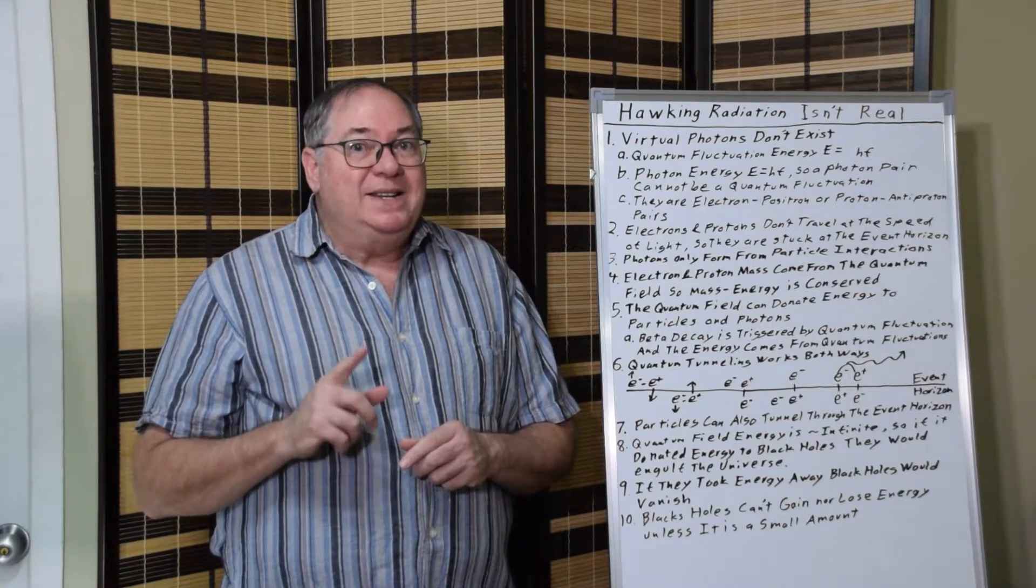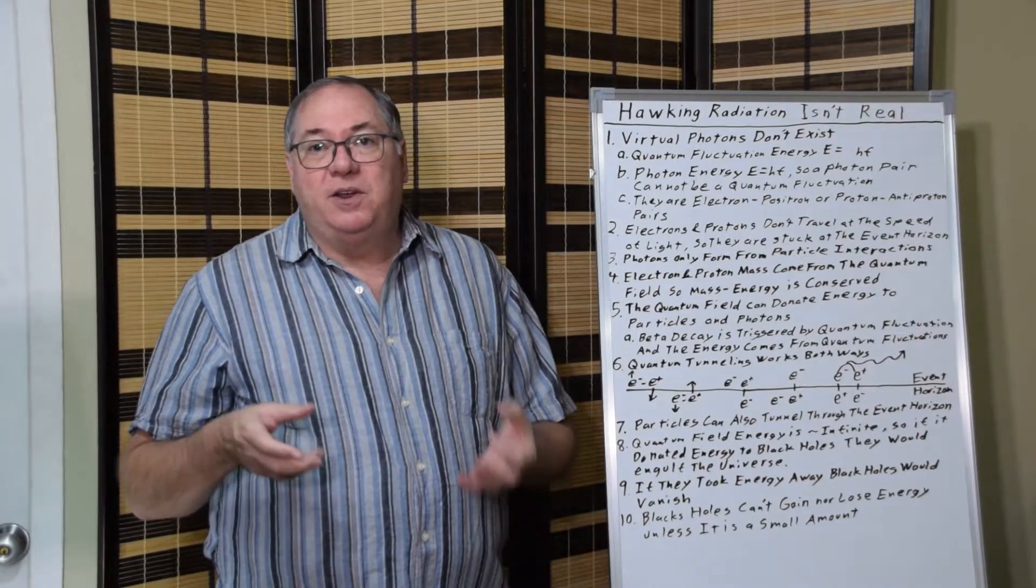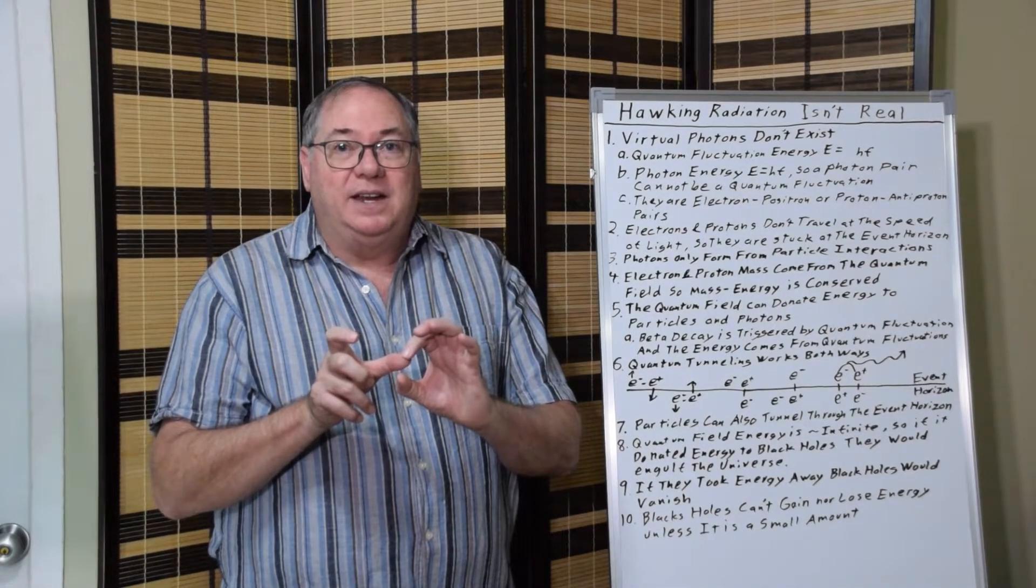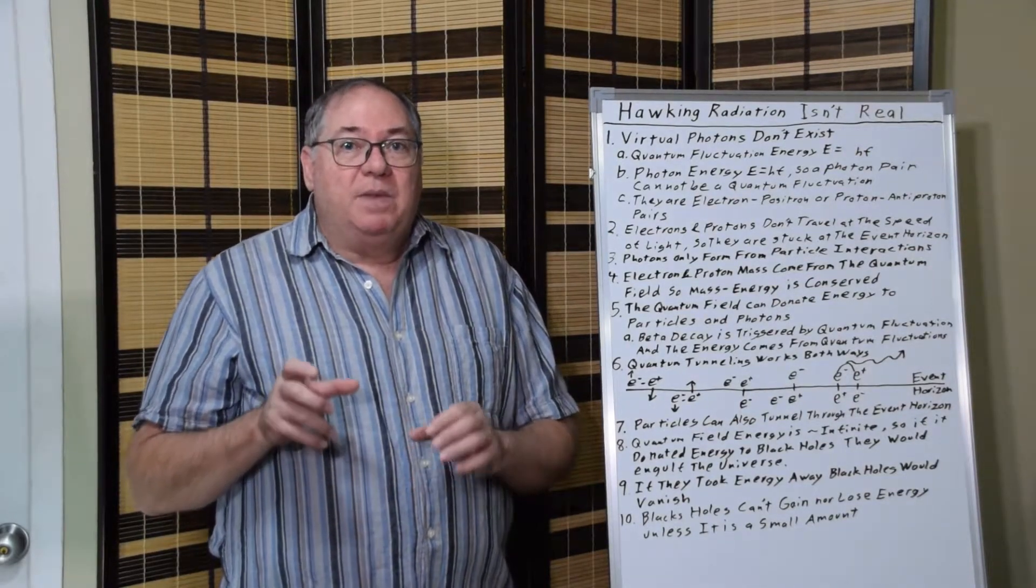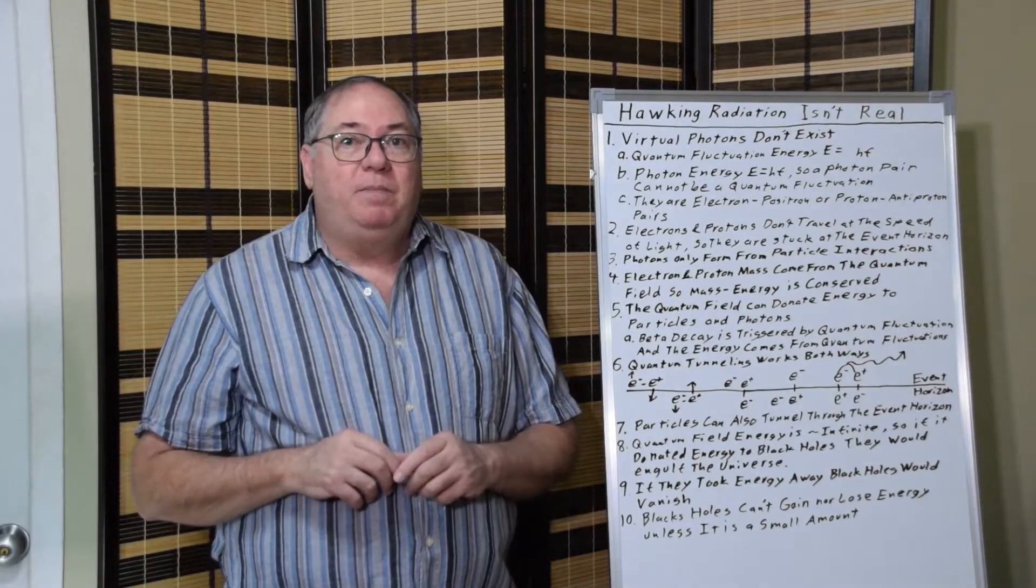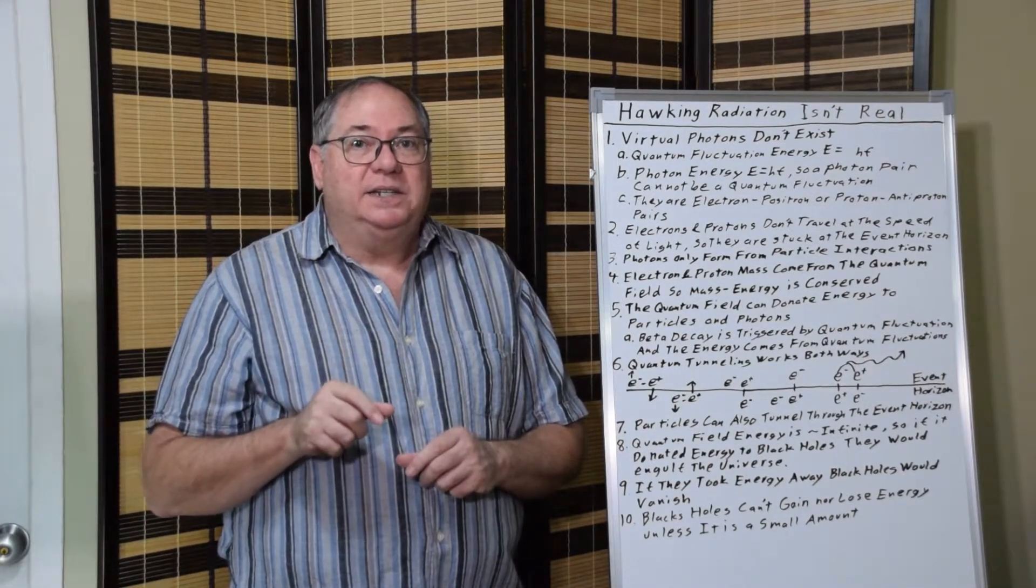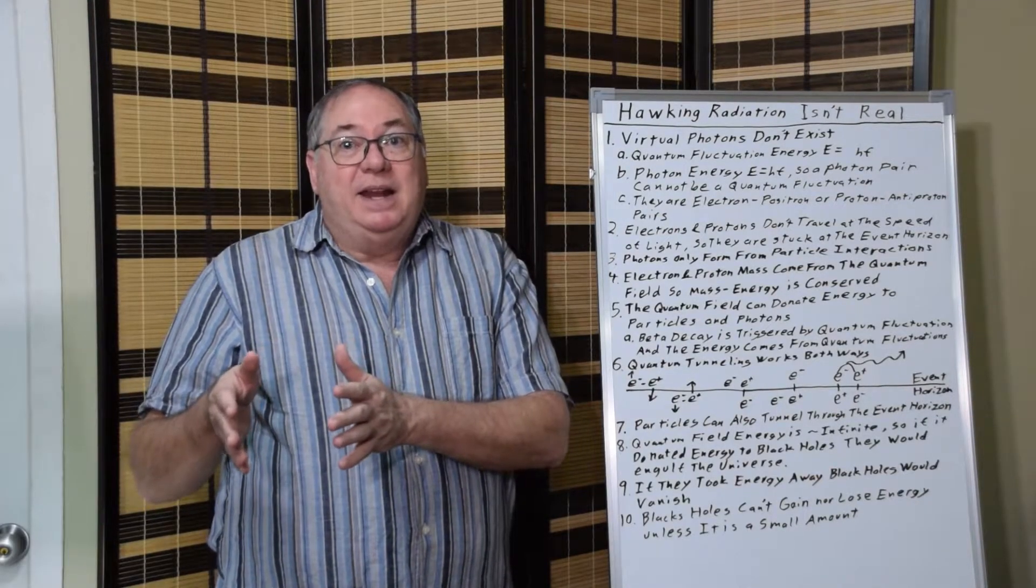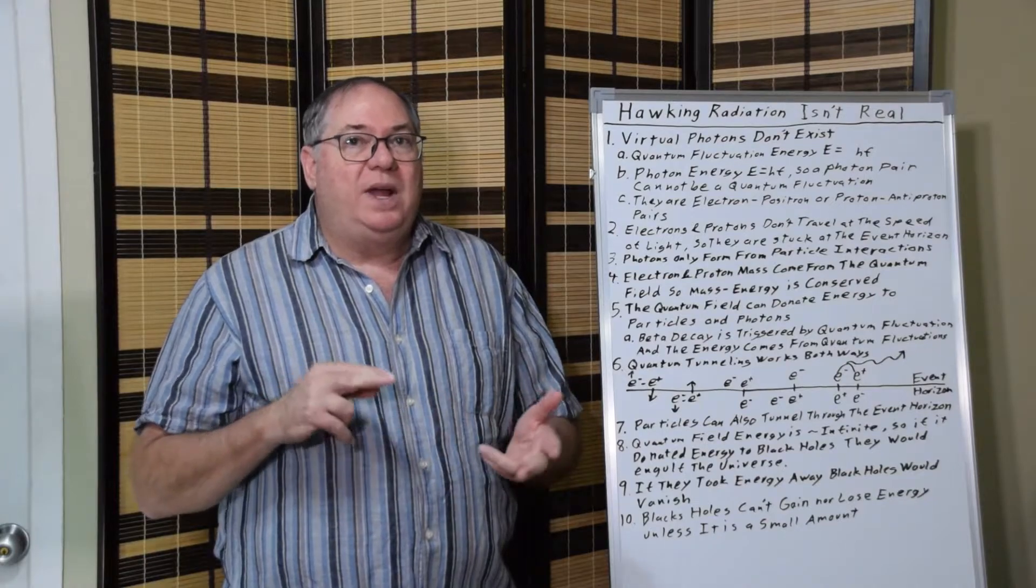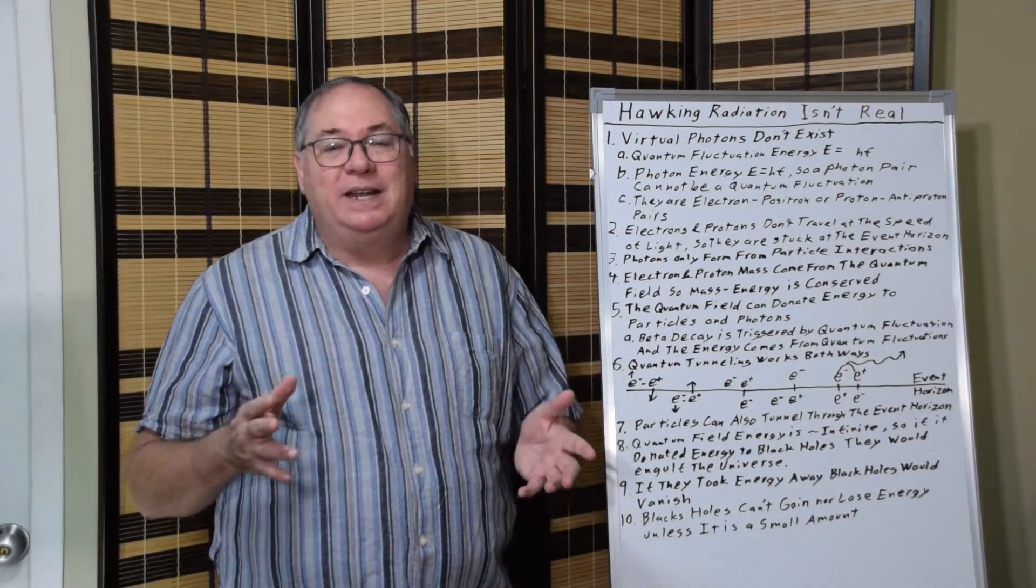We know from beta decay that it can donate energy. And that's because the true way that beta decay happens, so you have a neutron decay, is a quantum electron positron interacts with the neutron. The positron gets annihilated and the electron is left outside. The energy range of quantum electron positrons that can interact is limited. And it is the quantum fluctuations that donate their energy to the interaction that gives us the betas, because the electrons that are free have a range of energies that's the energy left over.